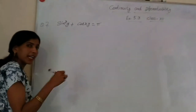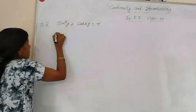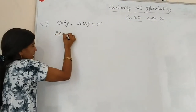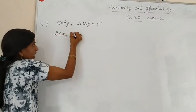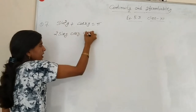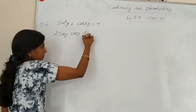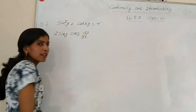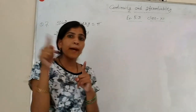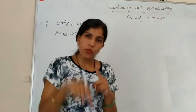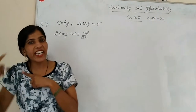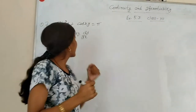For sin²y, first bring the power forward: 2 sin y. Then derivative of sin y is cos y, and derivative of y is dy/dx. So the first term gives 2 sin y · cos y · dy/dx.